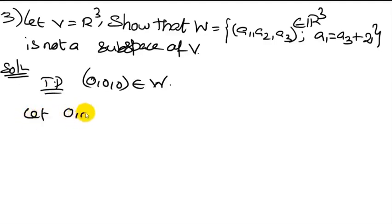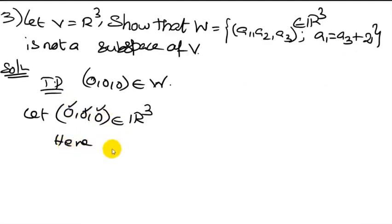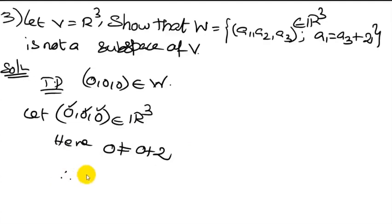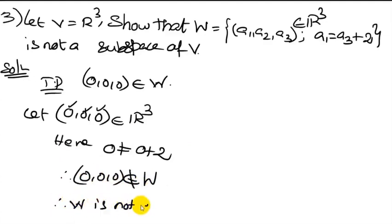Let (0, 0, 0) be an ordered triple in ℝ³. Here a1 = 0, a2 = 0, a3 = 0. Since a1 = 0 does not equal a3 + 2 = 0 + 2 = 2, the zero vector is not in W. Therefore W is not a subspace of V.